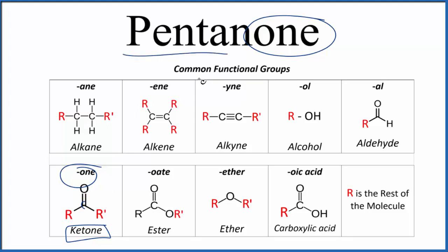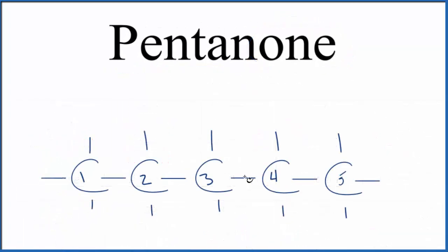The pent, pent means five. So we're going to have five carbon atoms in a chain with that double bonded oxygen. So let's write five carbon atoms in a chain and let's number them. So the question is, where do we put that double bonded oxygen?